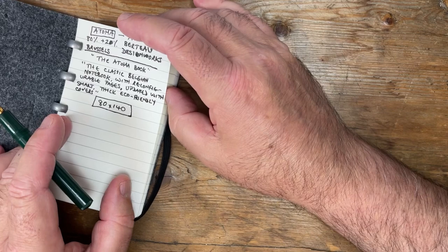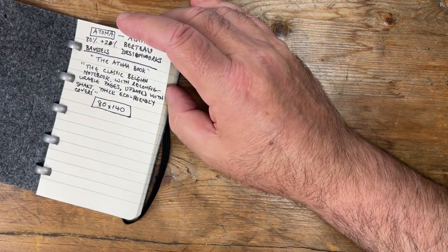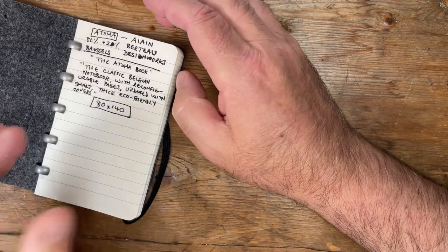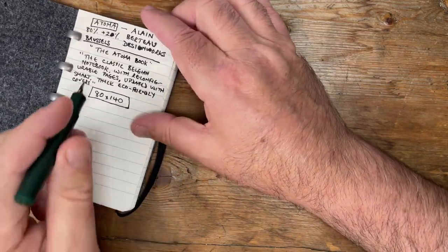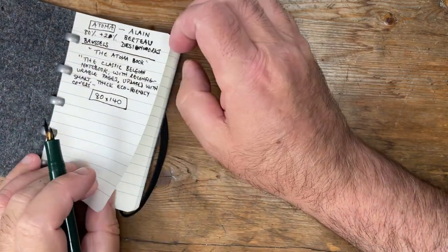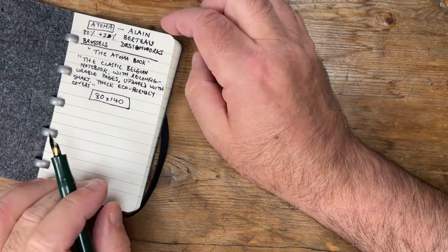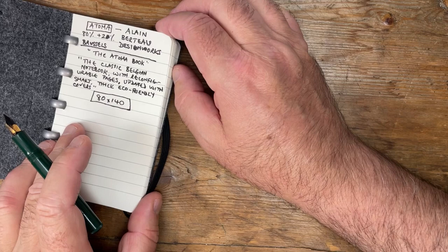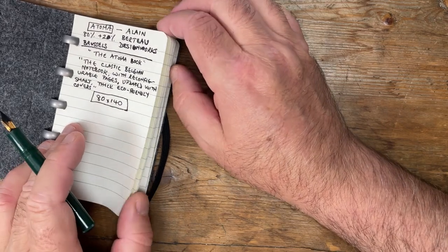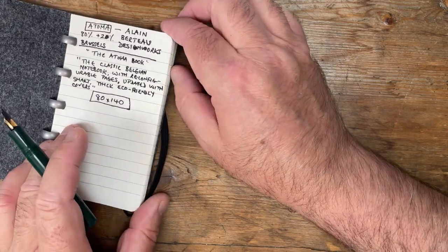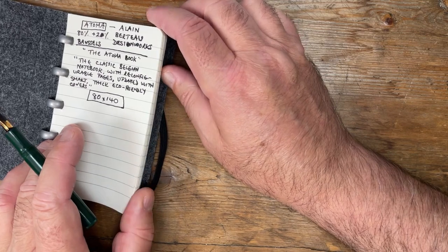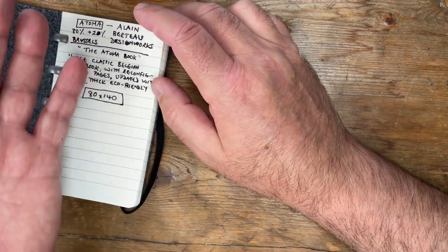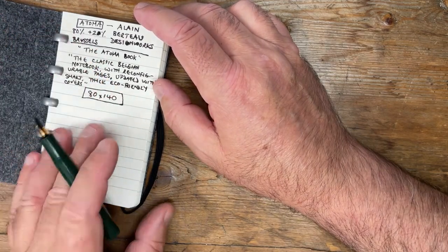But typically, as I record this, mid-September 2023, a Moleskine, certainly from Cult Pens, I actually had a look and checked it today, 16 pounds and 99 pence, so 17 pounds. This cost me 13 pounds 50 with 100 sheets. So slightly more sheets than a Moleskine, but it is much of a muchness, and it cost me £13.50.